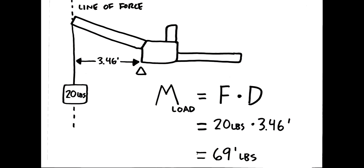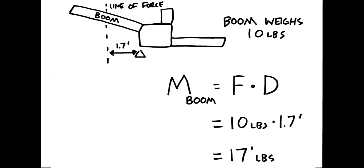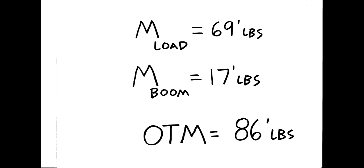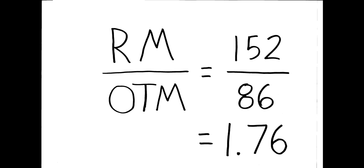For the overturning moment, we have the load and the boom. And the two of them combined to be 86 foot pounds. And the ratio of the two is 1.76, which is above the minimum 1.5.